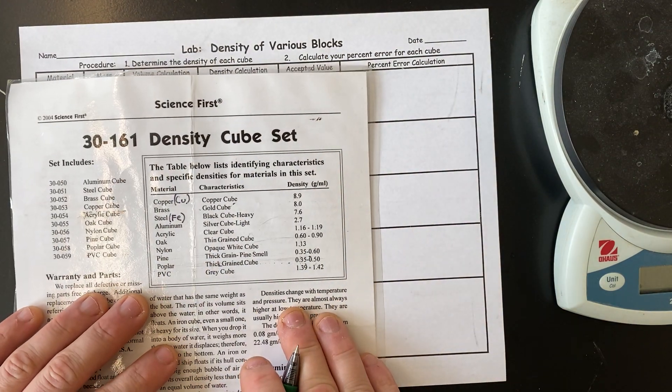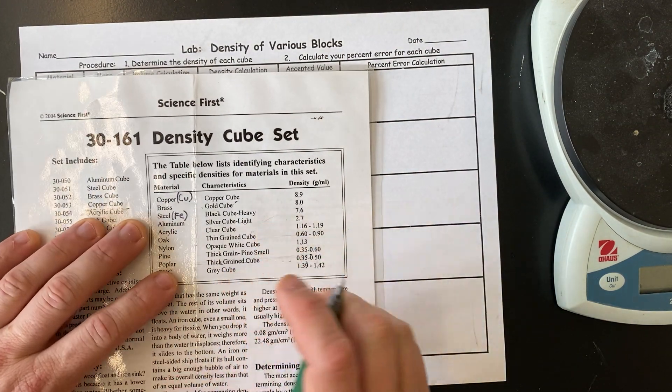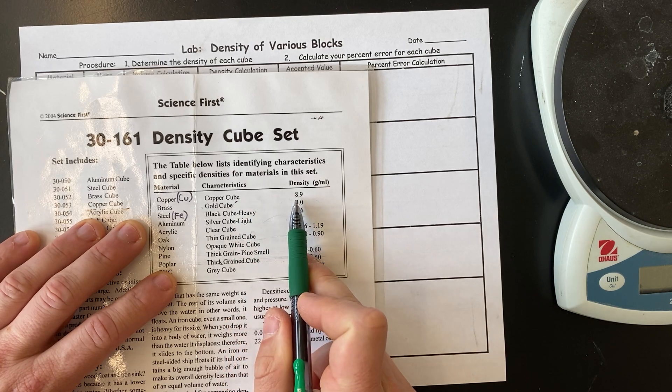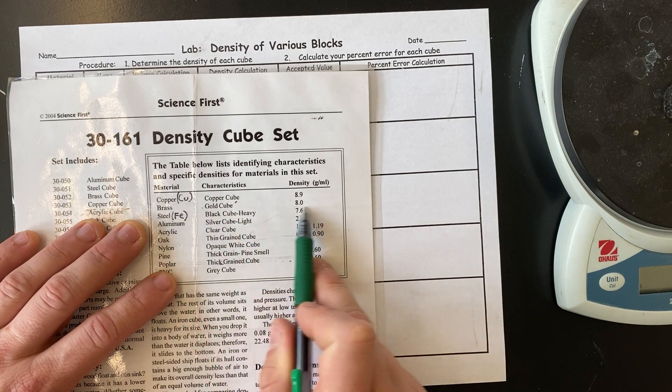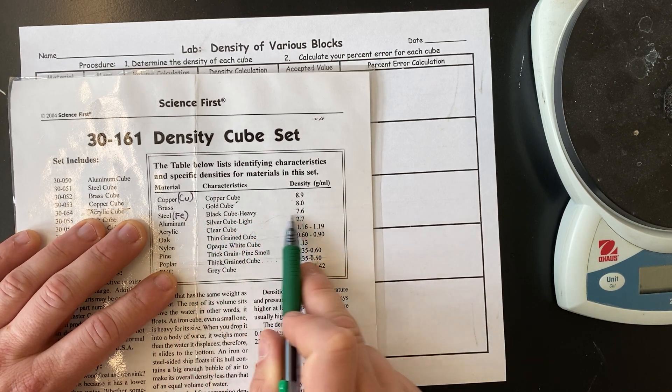So, if we look at this page, this will have all of them on there. So, for copper, we don't have a gold cube. The black cube heavy, that's our iron. I don't know why they labeled it that. The aluminum.